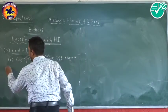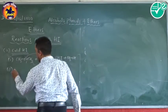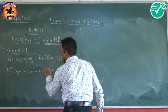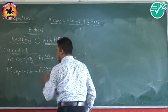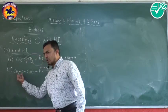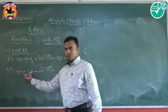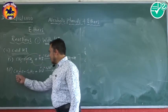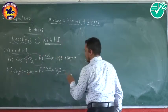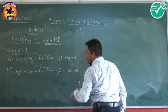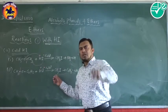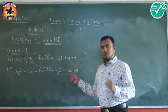Now for the mixed ether reacting with cold hydriodic acid — taking the example CH3OC2H5 reacting with HI under cold conditions — the same reaction takes place, but the smaller alkyl group attached to oxygen gets detached more easily than the larger one. So we get the formation of methyl iodide (CH3I) plus ethanol (C2H5OH). In short, mixed ether with cold HI gives the lower alkyl iodide and the larger alkyl group as an alcohol.